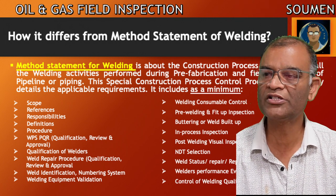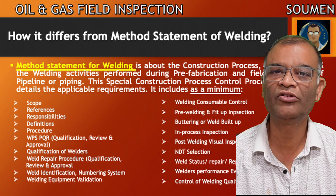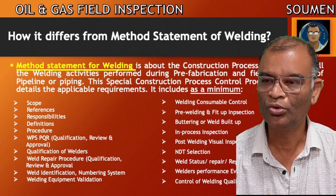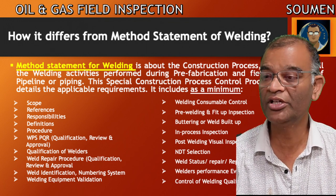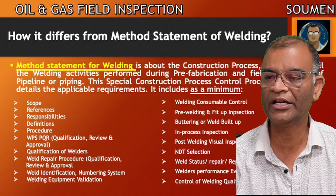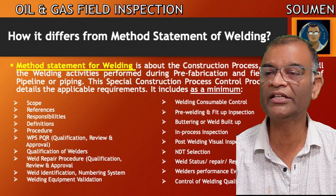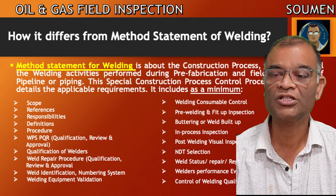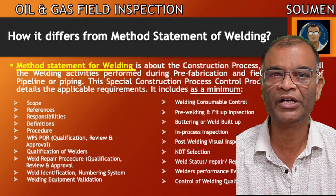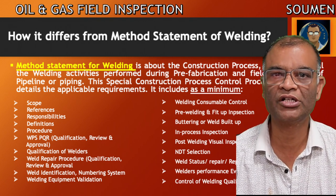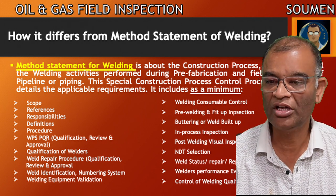Now the next point: how does WPS differ from the method statement of welding? As part of the quality plan or construction procedures, there will be a method statement for welding. It is about the construction process which covers welding activities performed during pre-fabrication and field installation of pipeline and piping. Welding is termed a special construction process, so this control procedure thoroughly details the applicable requirements. It includes as a minimum: scope; references — codes and standard references from international and all applicable company standards; definitions of any terminologies used; procedure; WPS/PQR qualification review and approval.